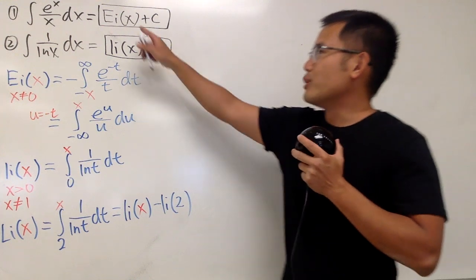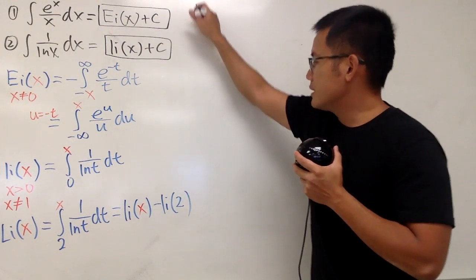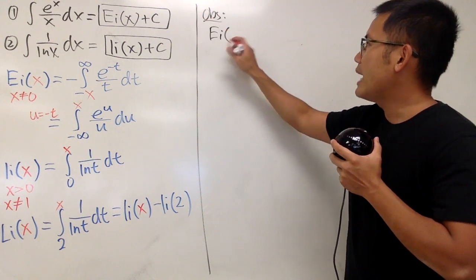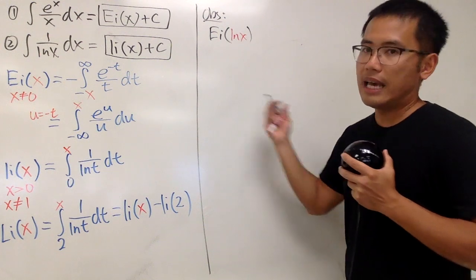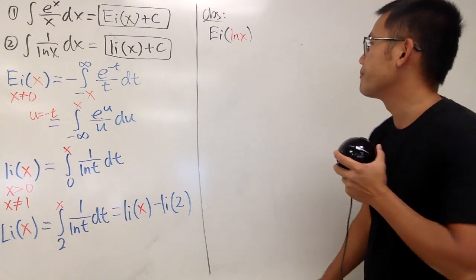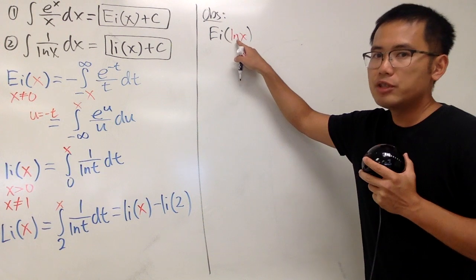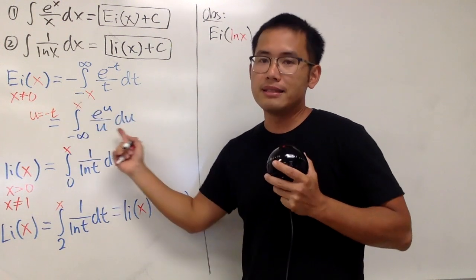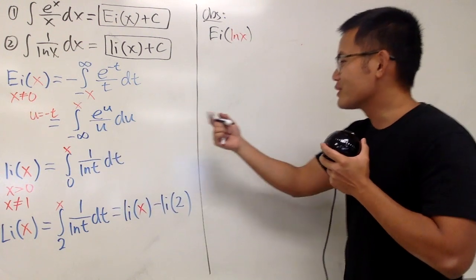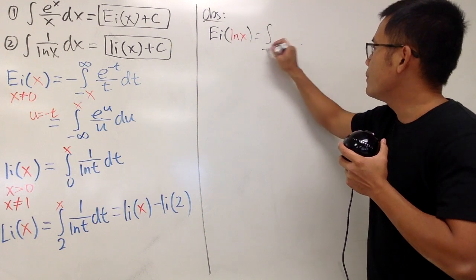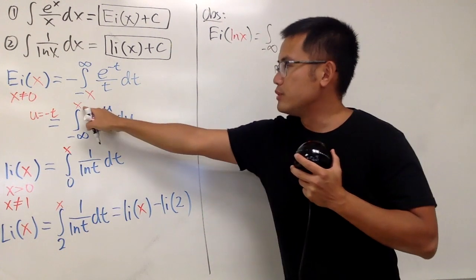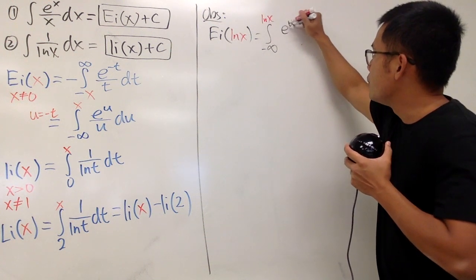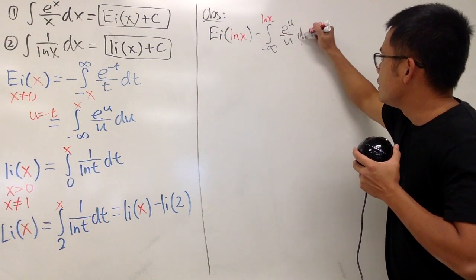Now, let's talk about the connection between Ei(x) and li(x). Here is the one I wanted to show you. Let's observe. What if we have Ei(ln(x))? Let's take a look right here to see what happens. In that case, let me just put natural log of x in here. Because again, this and that are equivalent. This right here, I think, is easier to work with. So let me just go from negative infinity to, for this right here, it will be just ln(x). So I will just put on ln(x) right here, and we have e^u over u du like this.